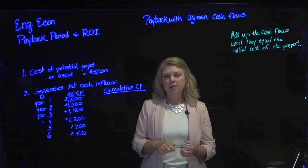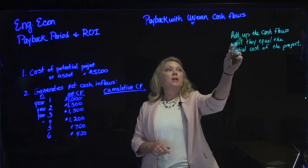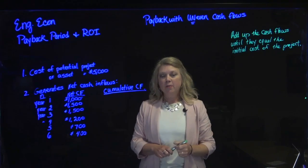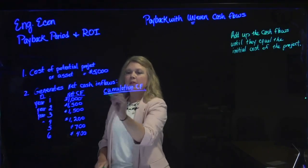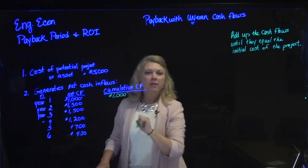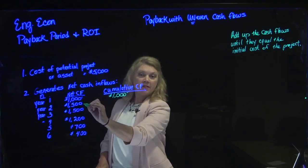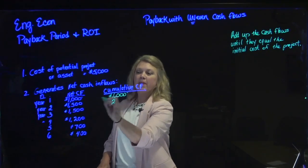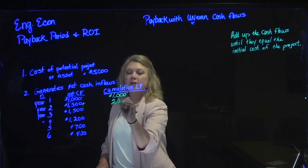So how long will it take to achieve the payback period? Simply, you add up the cash flows until they equal the initial cost of the project. We make a column called cumulative cash flow. At the end of year one we get $1,000 in, so cumulative cash flow is $1,000. By the end of year two we get another $1,500, so our cumulative cash flow is $1,000 plus $1,500 — that's $2,500 cumulative.